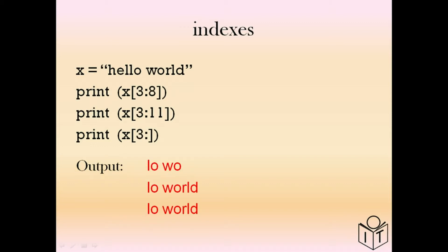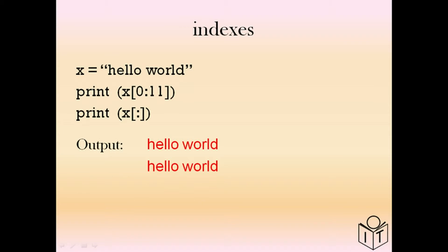We can also print to the end — here we have X[3:8] which gives 'lo wo'. Then X[3:11] goes to the end, printing from 'lo' to the end. If we're going to use a substring that goes to the end, we don't need to put the last number — in the last example we have '3:' with a blank after the colon, which prints the string from the third character to the end. If we want to copy the whole string, we can just use the colon by itself.